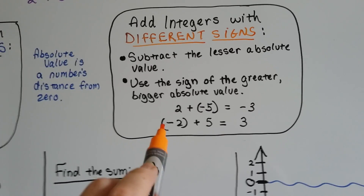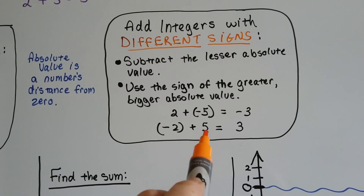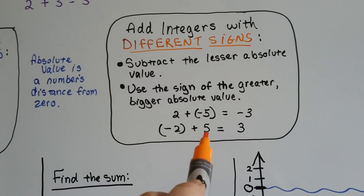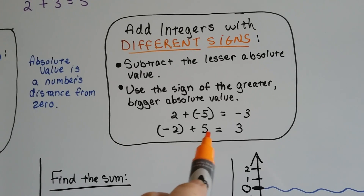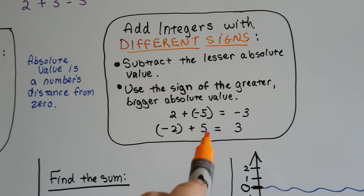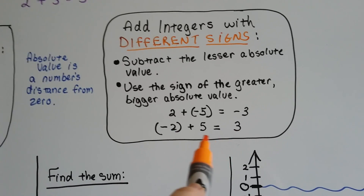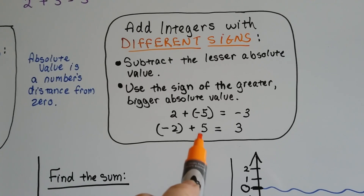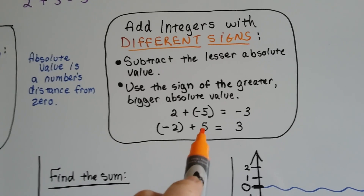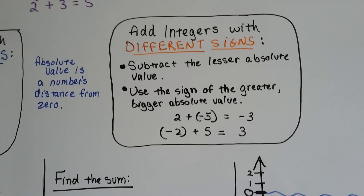The absolute value of negative 2 is 2, and the absolute value of 5 is 5. We subtract the lesser one — 2 from 5 is 3 — and we use the sign of the greater absolute value, which is positive.